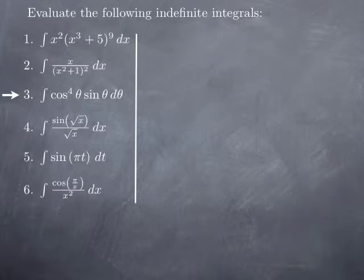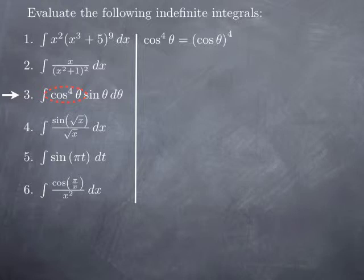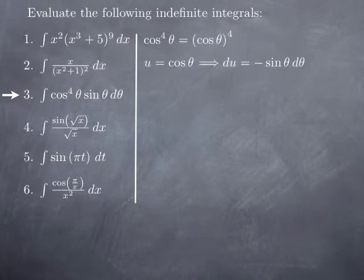For the third problem, we have the integral of cosine theta to the fourth multiplied by sine theta. The composite part here is cosine theta to the fourth. Remember that cosine to the fourth theta is a shortcut to write cosine of theta raised to the power of 4 — we are really plugging the cosine function into the power of 4 function. Therefore, we take u equal to cosine of theta, and then du is the derivative of cosine, which is negative sine, multiplied by d theta.